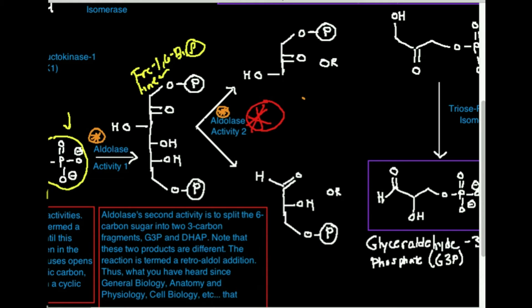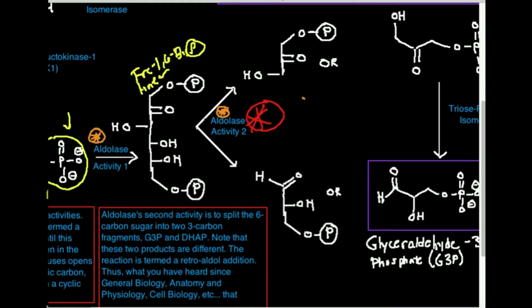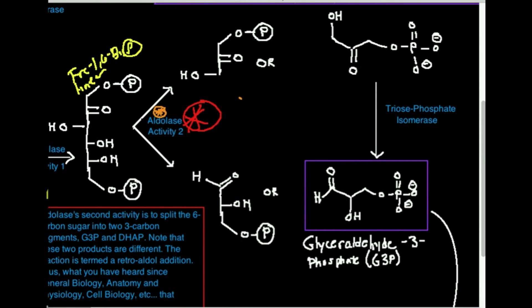If you really wanted to look at the structure, how they're normally drawn — they're drawn like this. This one happens to be dihydroxyacetone phosphate right here, and this one, which is the most important as we'll talk about in a minute, is called glyceraldehyde-3-phosphate, or G3P.